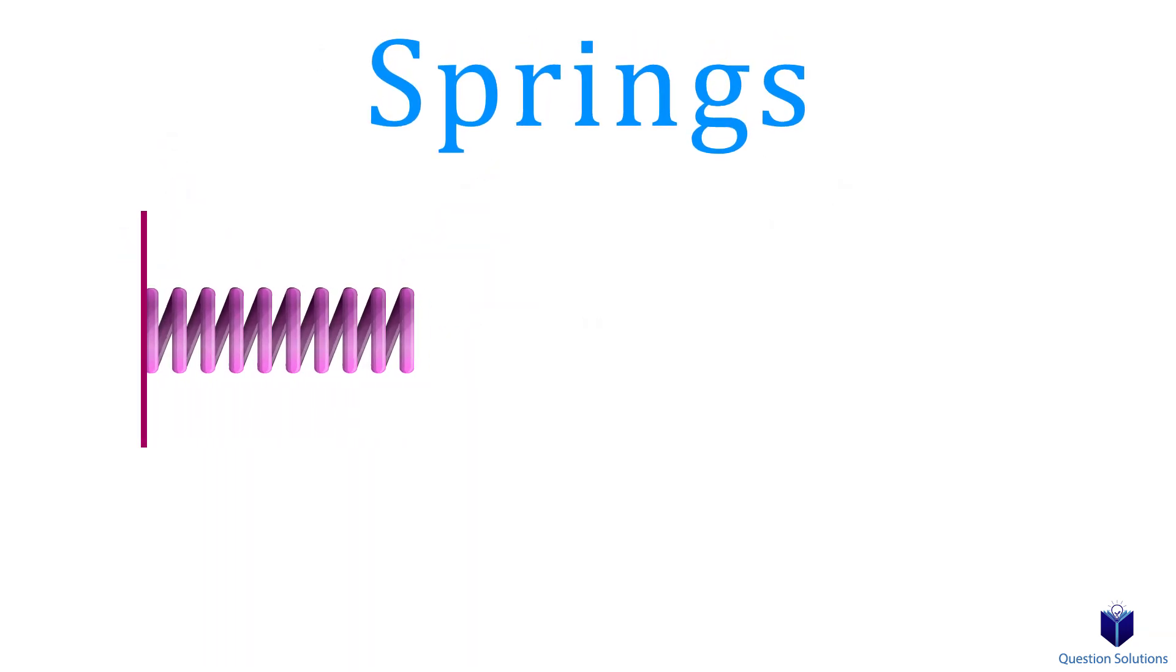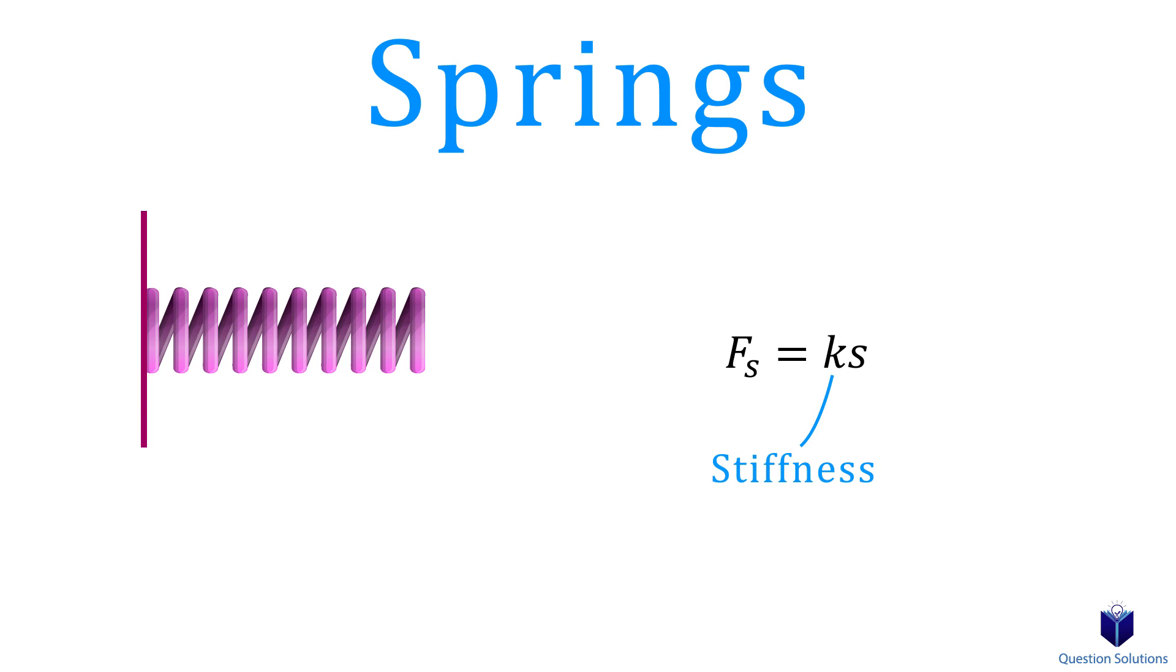Now let's discuss springs. When we have a spring like this, and we stretch it or compress it, the spring tries to go back to equilibrium. We can figure out that force by using Hooke's law. K is the stiffness of the spring, and S is the elongation or compression.